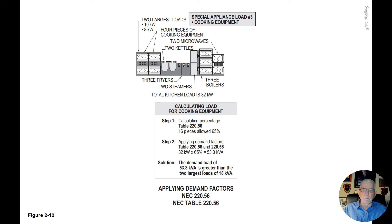Notice we have cooking equipment as shown in the illustration, and the total kitchen load is 82 kW. We have two largest loads of 10 kW and 8 kW. We have three fryers, two steamers, three boilers, two microwaves, and four additional pieces of cooking equipment — totaling 16 pieces of cooking equipment.